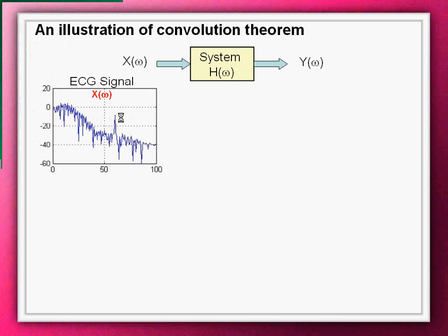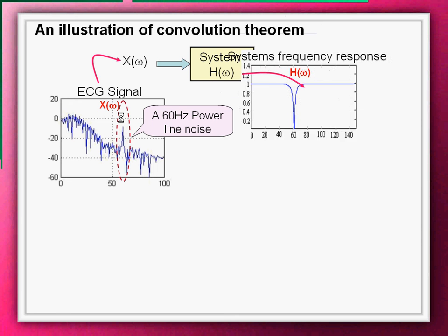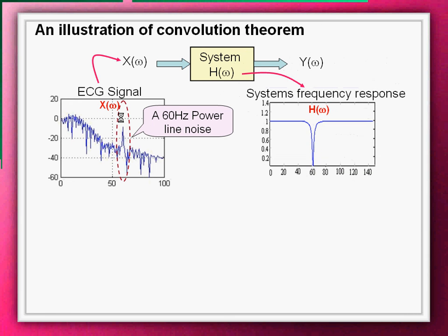The input to the system is an ECG signal. The signal is in frequency domain. The spike seen at 60 Hz is the power line noise interfering in the ECG signal. Now, let's look into the system at which the ECG signal is applied. The system is designed as a notch filter. As shown, the notch is exactly at 60 Hz. Thus, the filtering of the 60 Hz frequency from ECG signal.